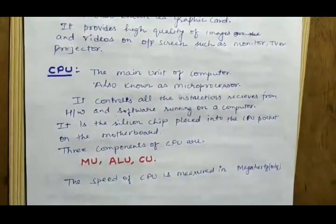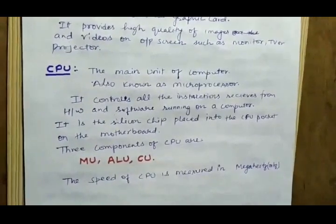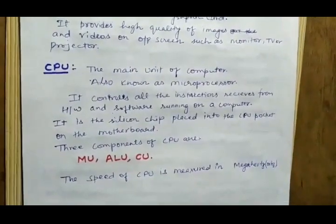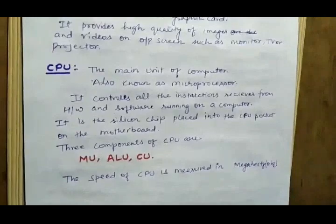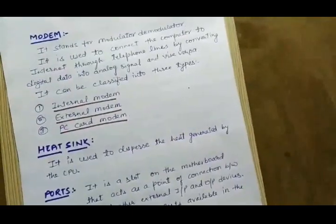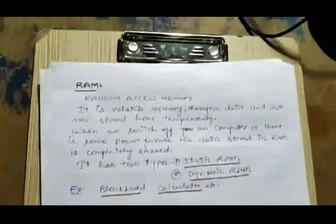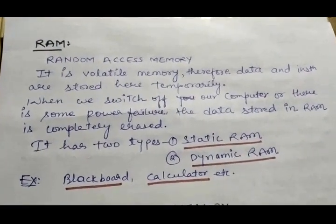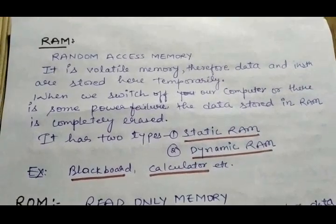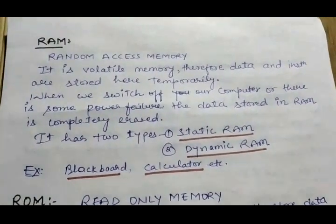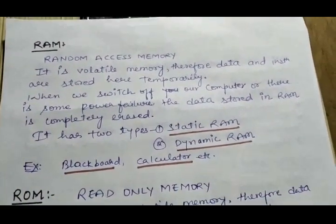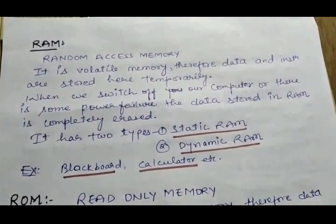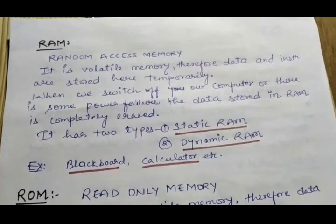The ALU handles logical operations like less than, greater than, equal to, and not equal to. The speed of a CPU refers to the number of instructions the CPU executes per second, and it is measured in megahertz (MHz). There are two types of memory in a computer: primary memory and secondary memory. Primary memory is categorized into RAM and ROM. Secondary memory contains storage devices like hard disk, CD, DVD, Blu-ray disc, pen drive, etc.